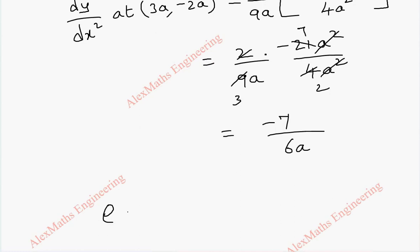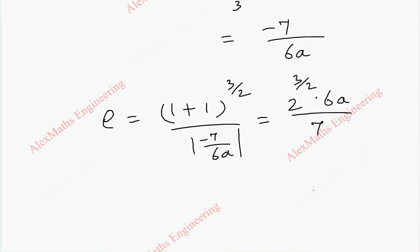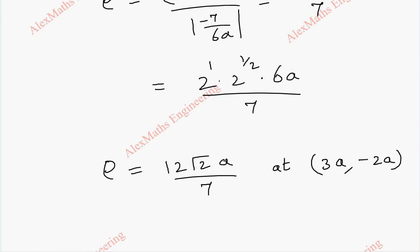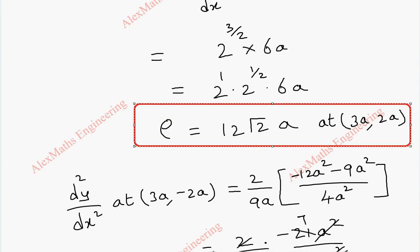For the radius of curvature at (3a, −2a), we take the modulus of the second derivative, so |d²y/dx²| = 7/6a. Thus ρ = 2^(3/2) · (6a/7) = 12√2 a / 7. So we have two radii of curvature: 12√2 a at (3a, 2a), and 12√2 a / 7 at (3a, −2a).